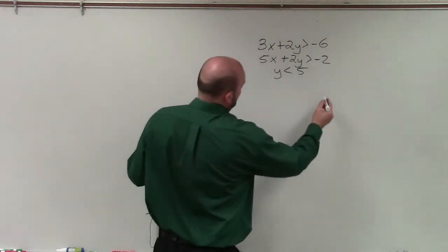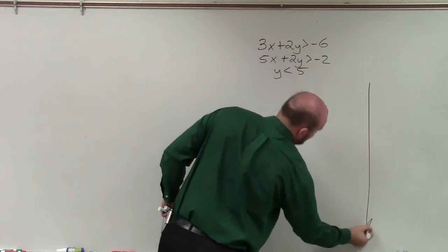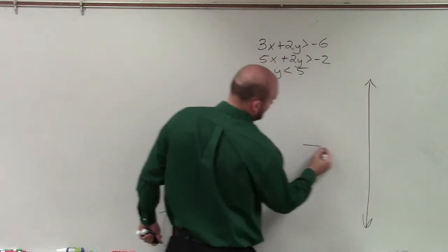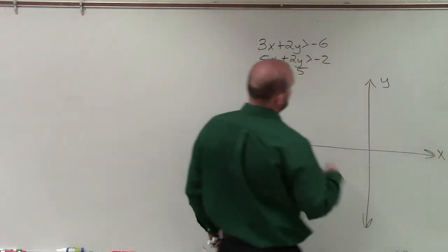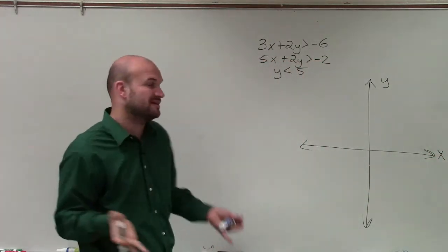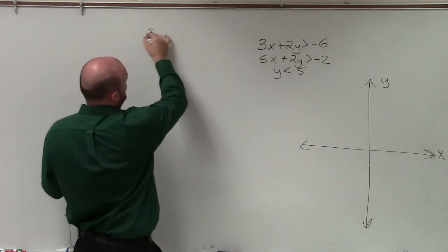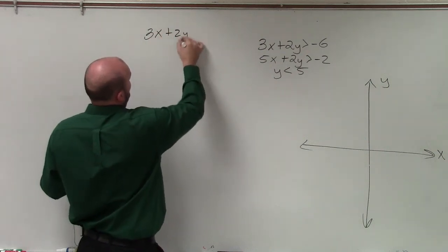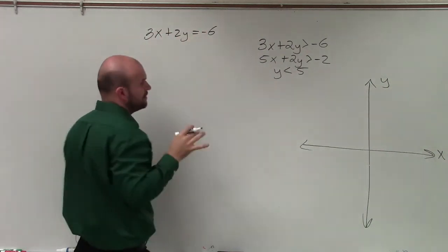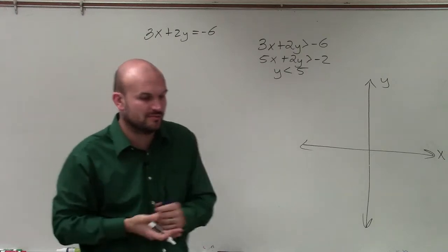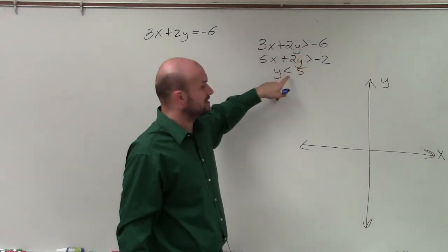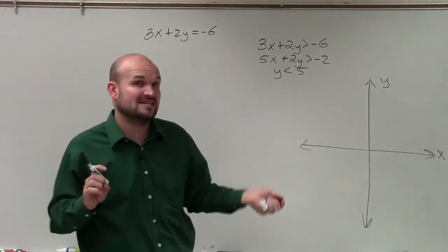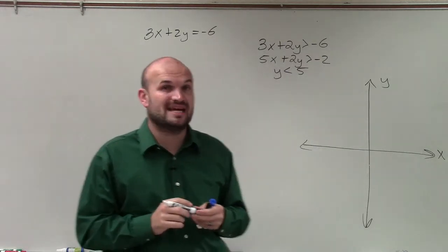So when graphing these, before I even get into testing my points and determining what their graphs are going to look like, I usually like to graph, rather than looking at inequalities, I like to graph thinking of them as equations. I'll go back to inequality when I need to determine shading and dashed or solid, which you can see these are all greater than, greater than, less than. They're not greater or equal to or less than or equal to. So therefore, they're going to all be dashed boundary lines.